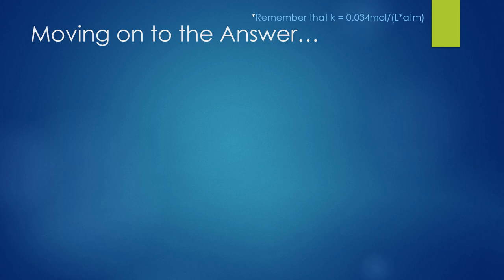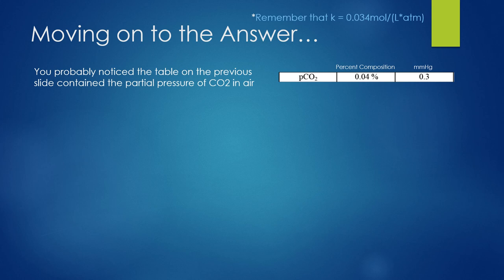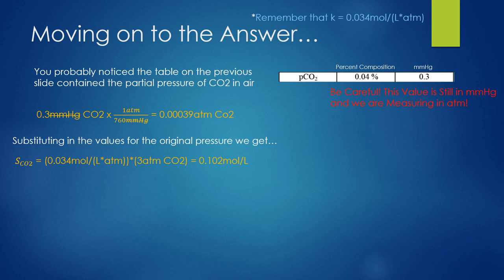The only value we don't have is the pressure of carbon dioxide in the atmosphere. As you may have noticed in the previous slide, a table was provided with the partial pressures of many gases in the atmosphere. The partial pressure of CO2 is listed there — just what we needed. However, be careful: right now we are measuring in atmospheres, but the pressure of CO2 is given in millimeters of mercury. This isn't too hard to convert, but it is something you are going to want to keep in mind, as Henry's constants are typically given in moles per liter atmosphere.